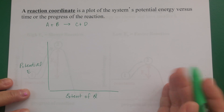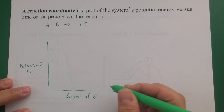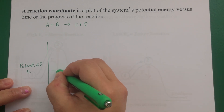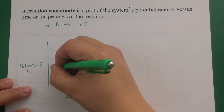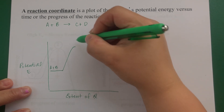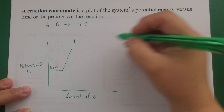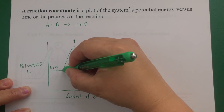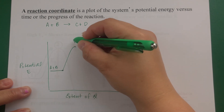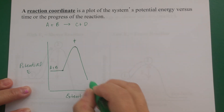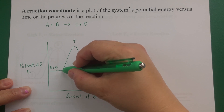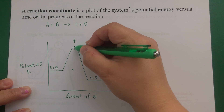Your reagents are at the beginning and your products at the end. The reagents start at some energy level, collide, and must overcome an energetic barrier to reach the transition state at the peak. The distance between the tip of the transition state and the reagent level is the activation energy — the energy required to get from reagents to transition state. The transition state is unstable, so it quickly becomes your products C and D. The activation energy is symbolized as EA.